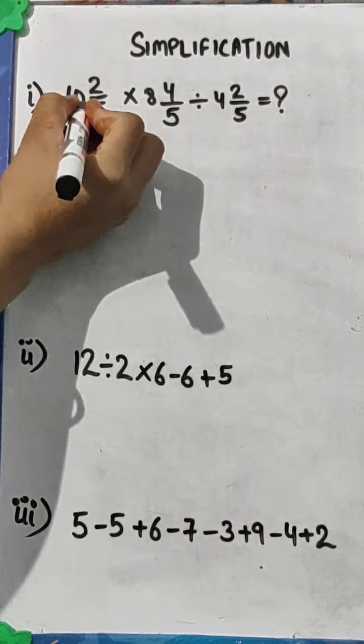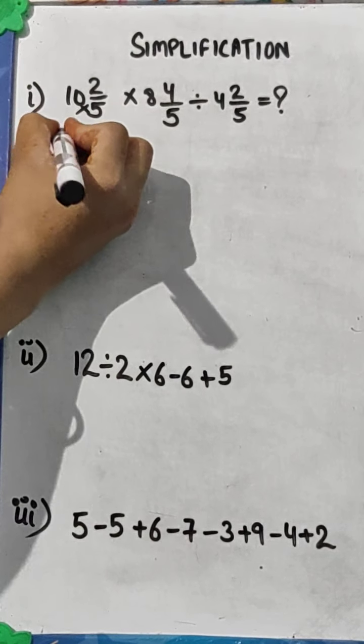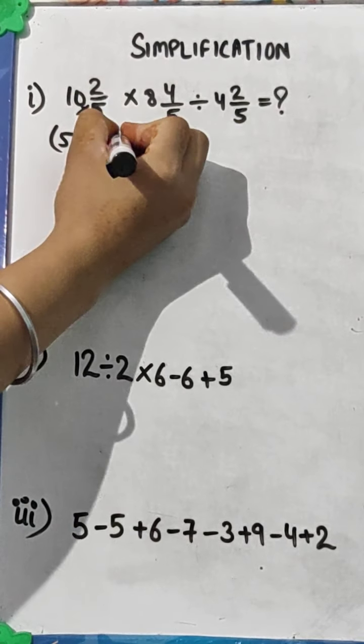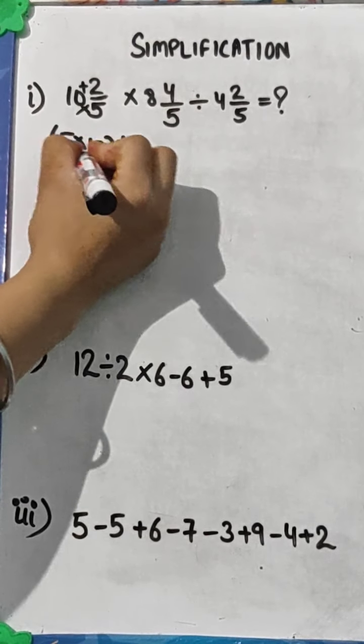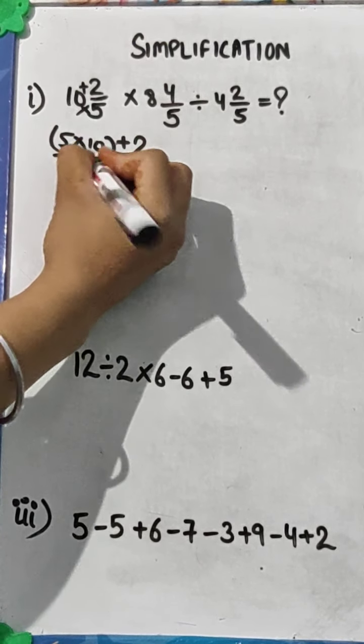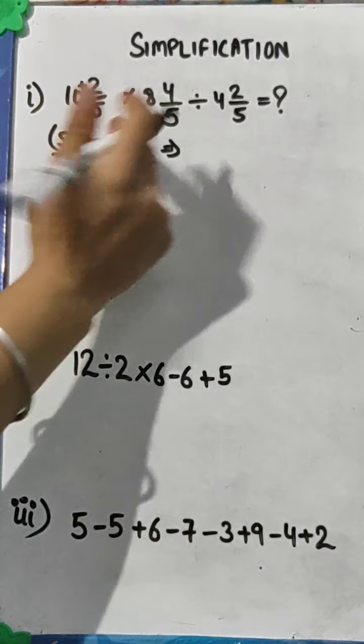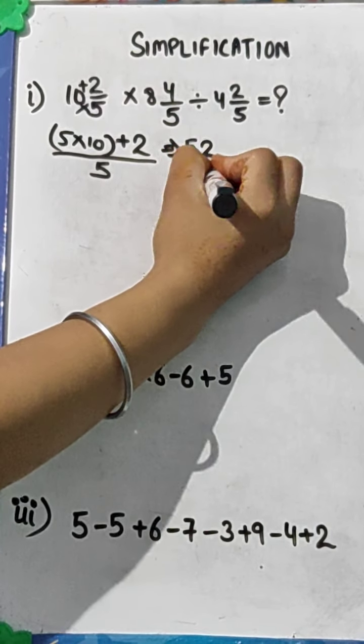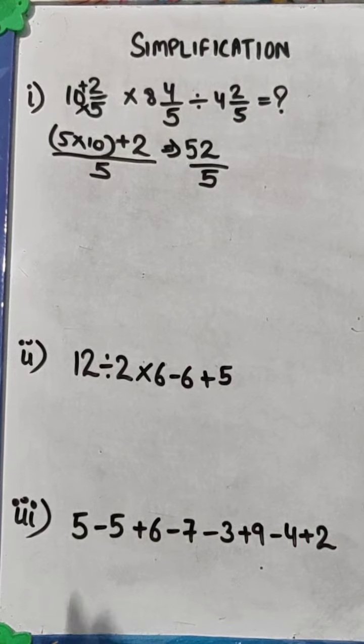So how you will convert it? Firstly you have to multiply these two. So first you have to multiply 5 into 10. And whatever your result is, add the numerator in it. The denominator remains same. So it becomes 50 plus 2, so 52 by 5. So in this way we can convert mixed fraction into improper fraction.